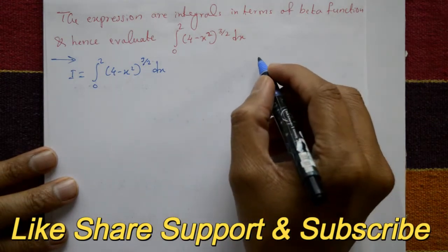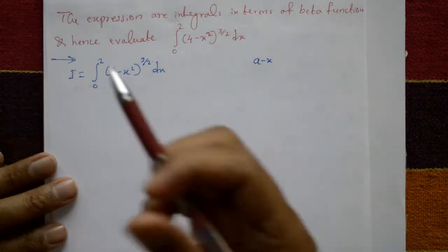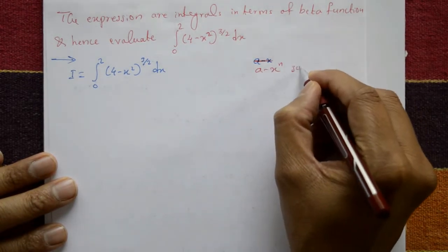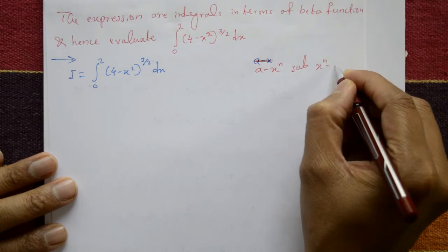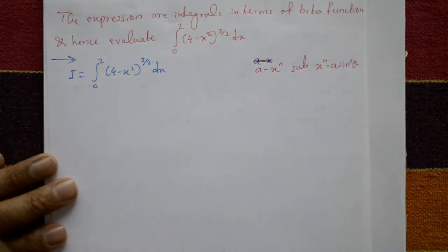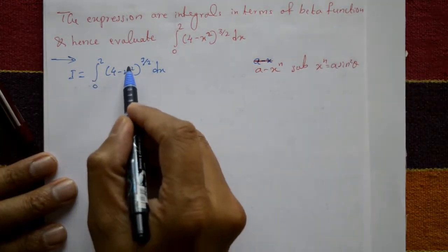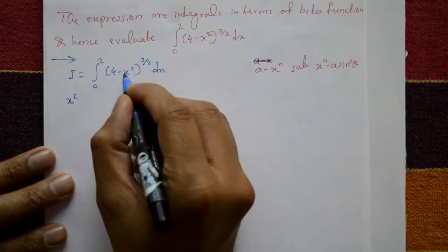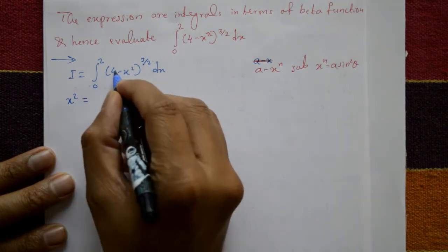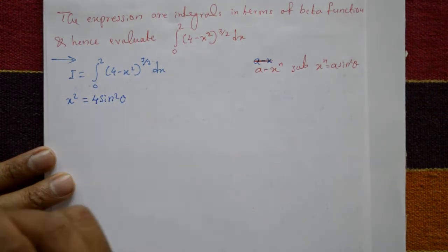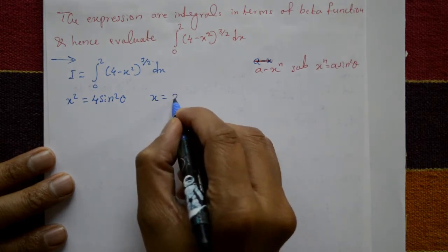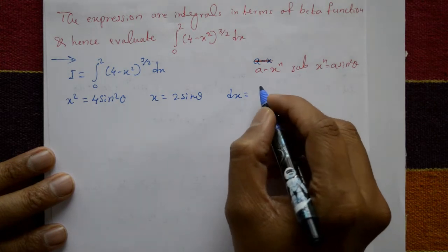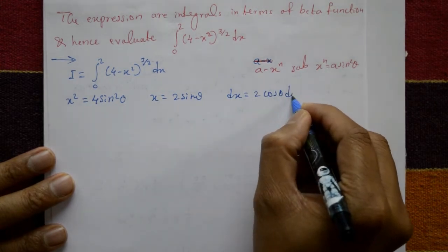For the form (a minus x^n) to the power n, we substitute x^n equal to a sine squared theta. Here x squared equals 4 sine squared theta, so x equals 2 sine theta, and dx equals 2 cos theta d theta.